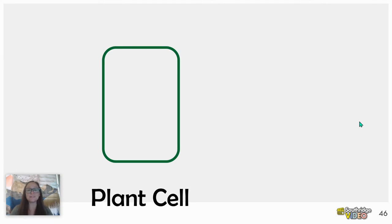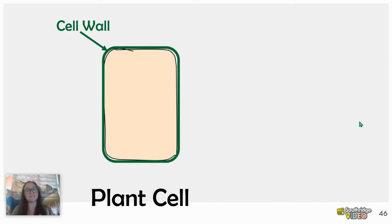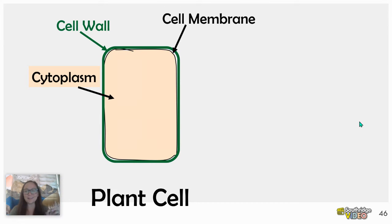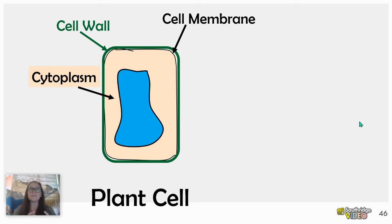Plant cells are surrounded by a rigid cell wall that's made of cellulose. On the inside of a plant cell, you have the cell membrane and the cytoplasm. That black line you can see is actually the cell membrane, which is on the inside of the cell wall. For the sake of this video, we're going to focus on the central vacuole.